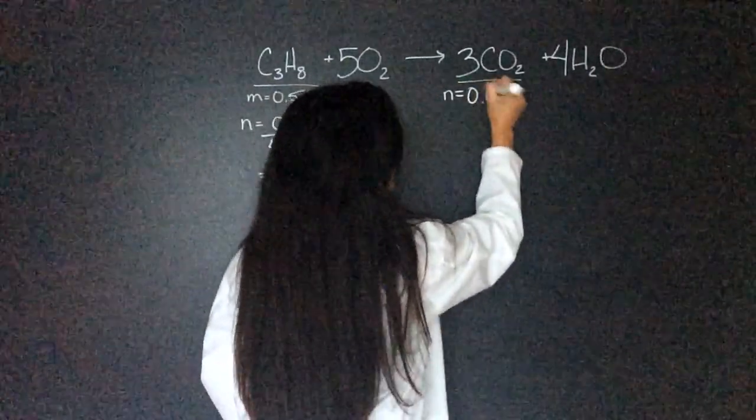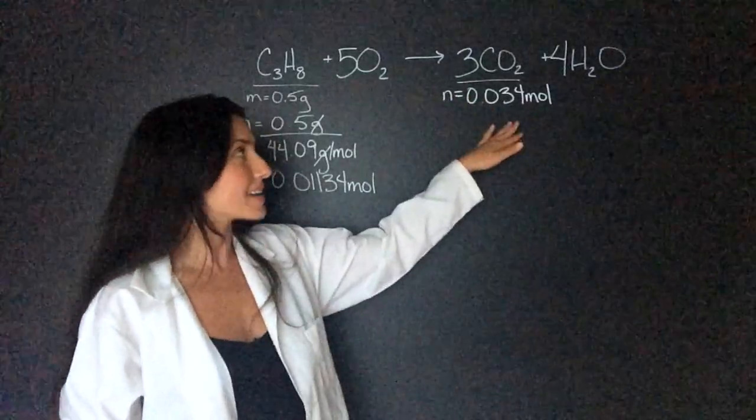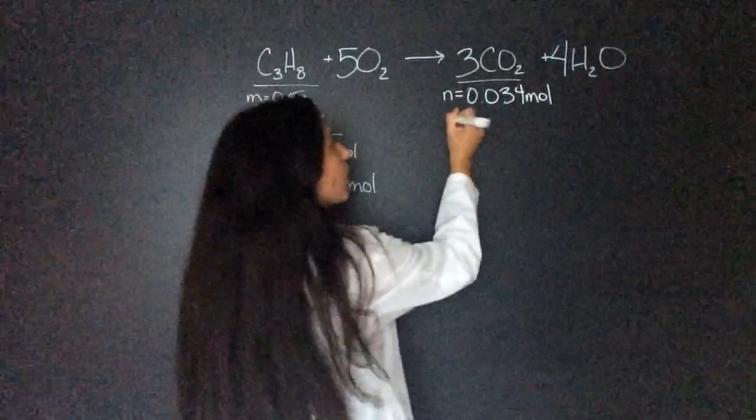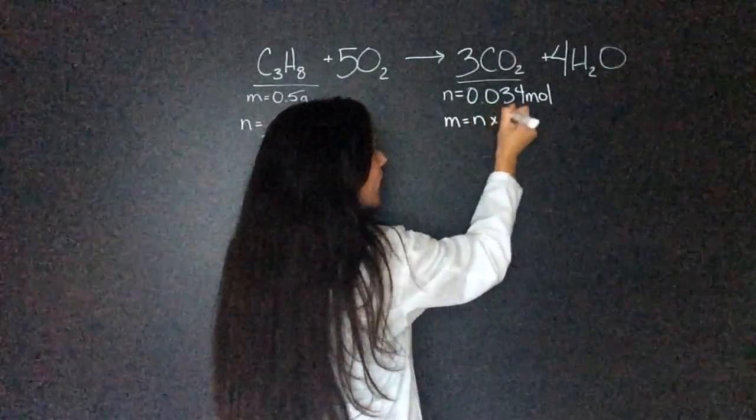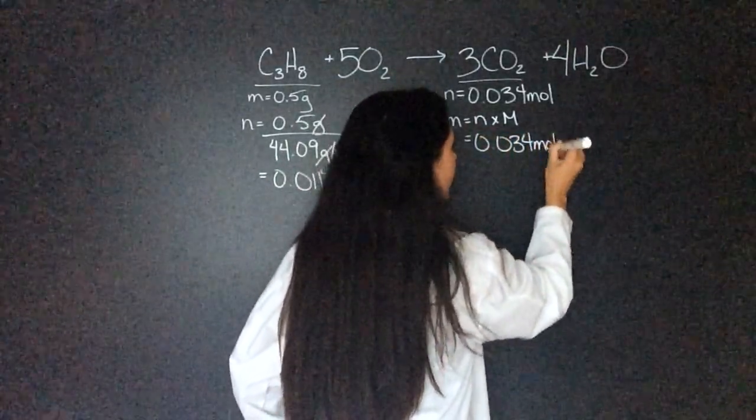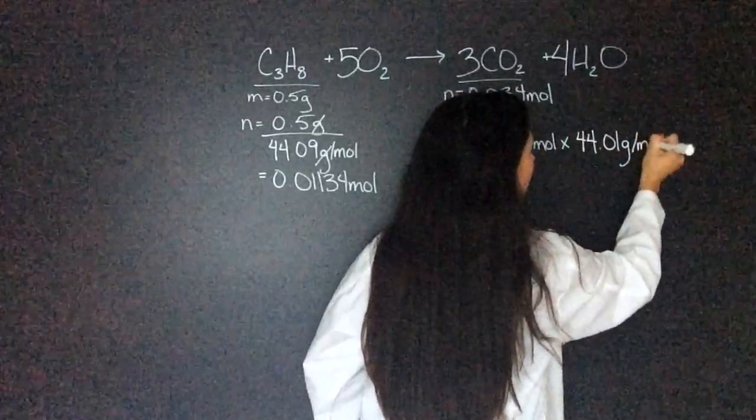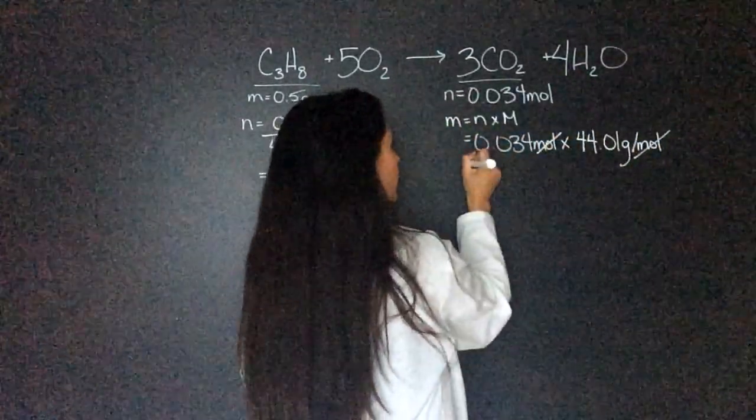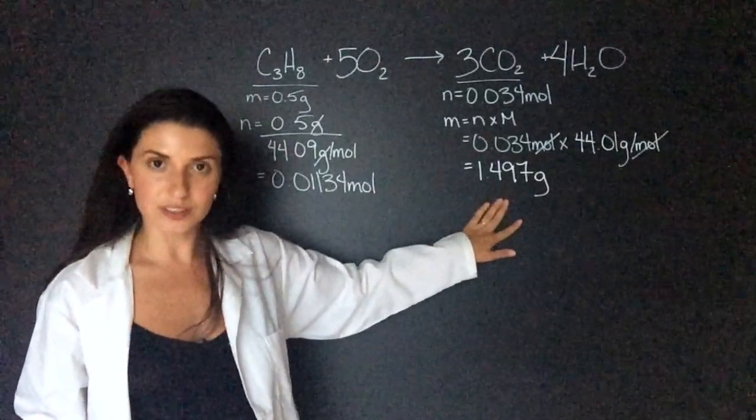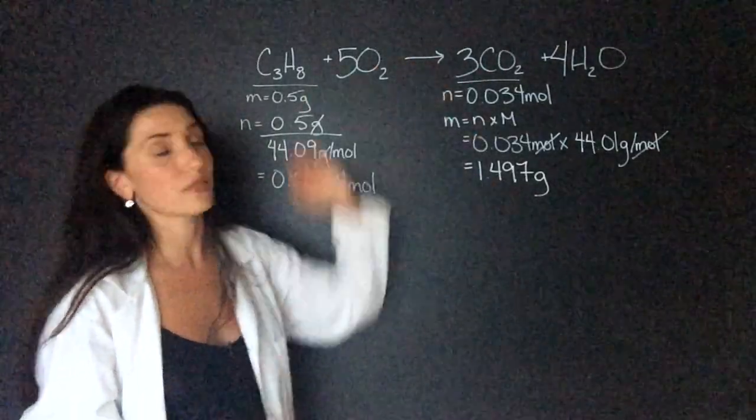Now I have to find the mass of carbon dioxide, and it's just using the same moles-molar mass equation, but opposite. So we know that mass is going to be moles times molar mass. So that equals 0.034 mole times the molar mass of carbon dioxide, which I calculated is 44.01 grams per mole. The moles will cancel out and we're left with 1.497 grams. So that is the theoretical yield for this reaction. If everything went perfect in this reaction we would have 1.497 grams of carbon dioxide.